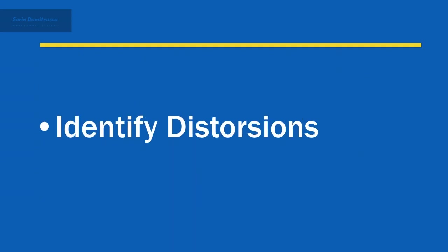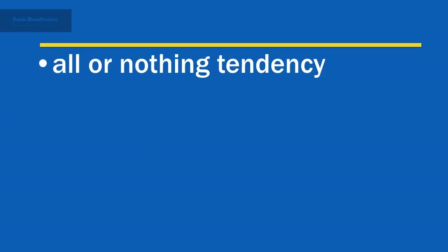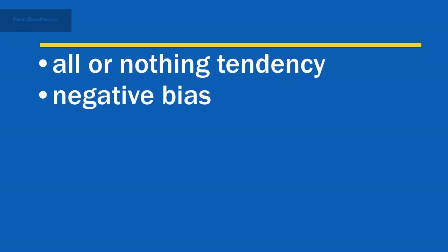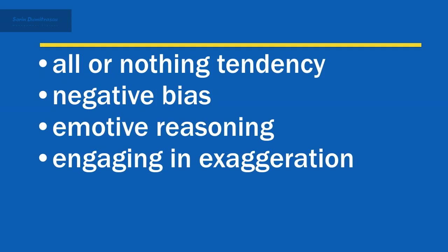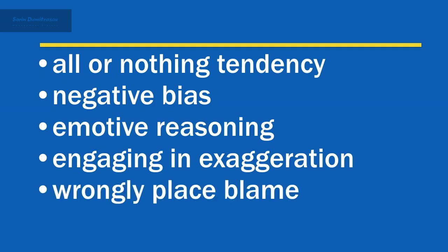The second step for improving how you look at a situation is to identify distortions. There are several types of thought distortion that often occur when you are under pressure. First is the tendency to view situations in terms of all or nothing — true overgeneralization. Second is having a negative bias. Third is being prone to emotive reasoning. Fourth is engaging in exaggeration. And fifth is the tendency to wrongly place blame on others or on yourself.